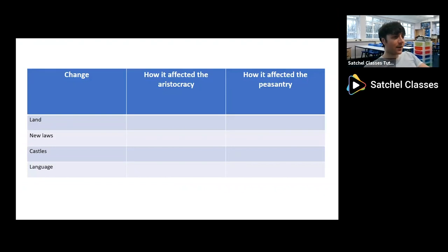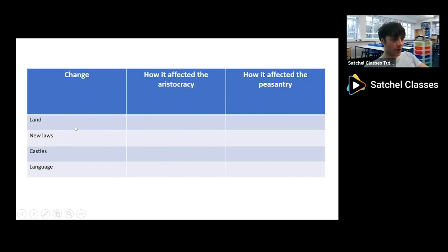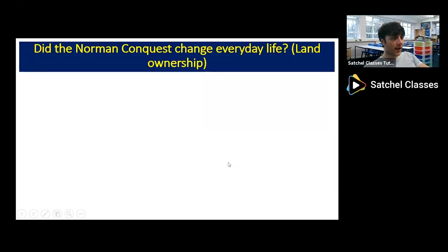Now pause the video and copy out the table on screen. As we go through the lesson, we'll fill out each row looking at a different type of change — how it affected the aristocracy and how it affected the ordinary person, the peasantry. We'll begin with land. When you're ready, we'll look at how the Normans changed land ownership.